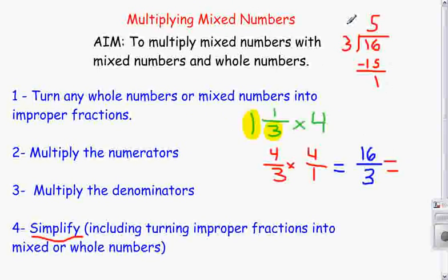So 16/3 is equal to—our answer gives us our whole number, which is 5. Our remainder of 1 gives us our numerator. And our denominator stays the same. So 16/3 is equal to 5 and 1/3. And that is our answer.